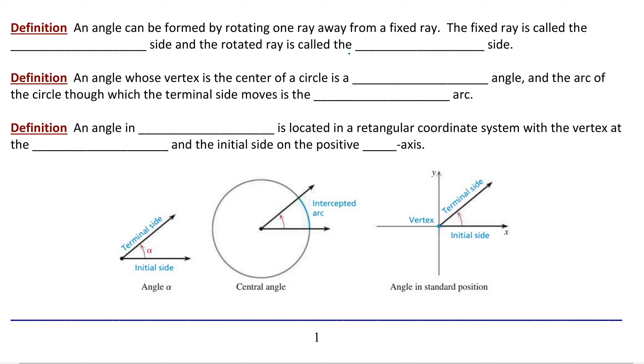The fixed ray is called the initial side. And the rotated ray is called the terminal side. Notice in the picture down below, we start with an initial side and we rotate through an angle and stop at the terminal side. So a direction of rotation will be implied with the measure of our angles.